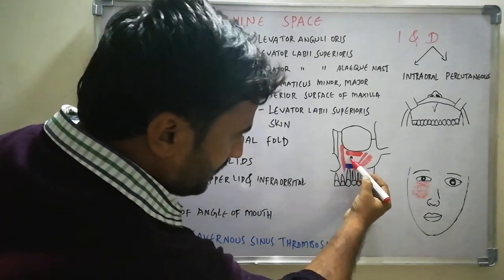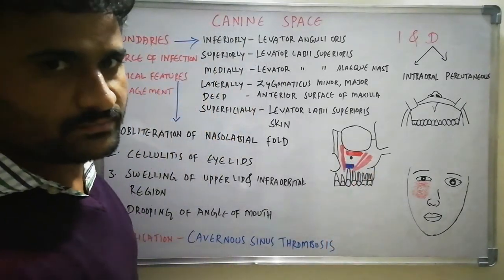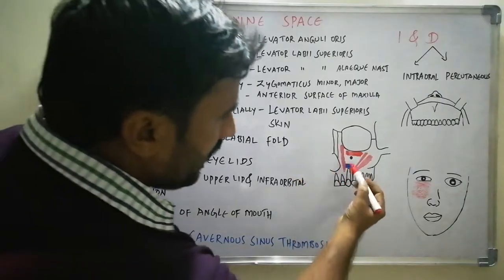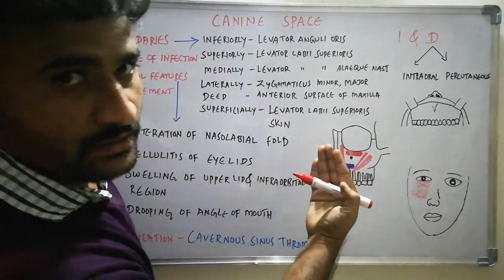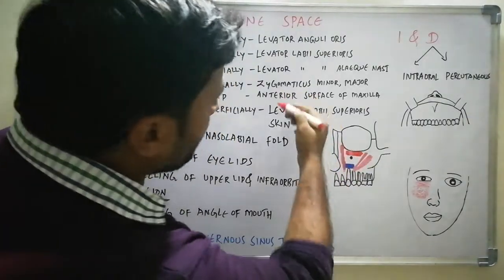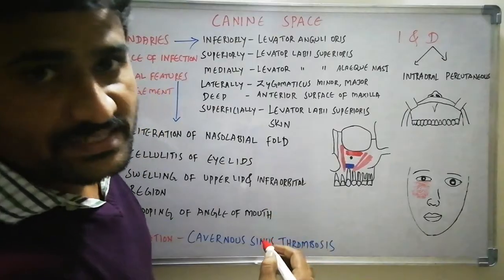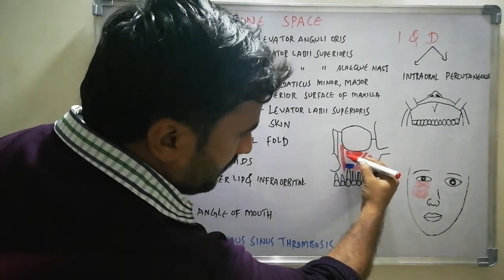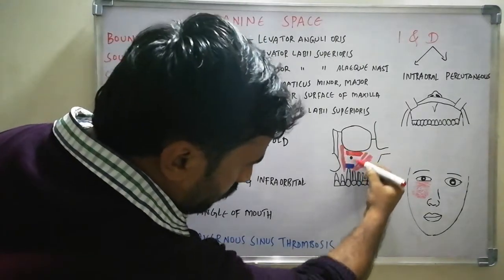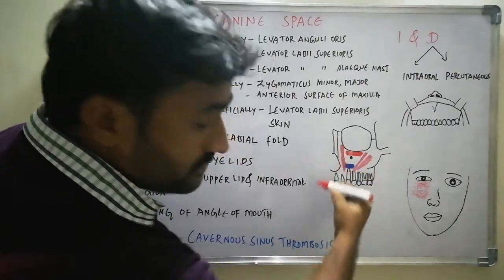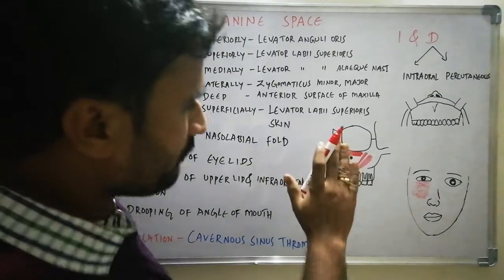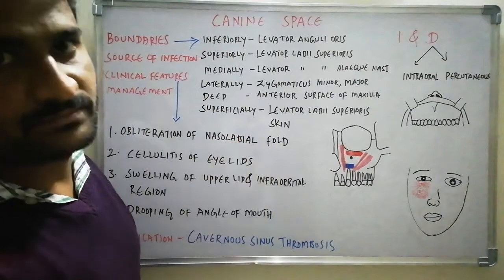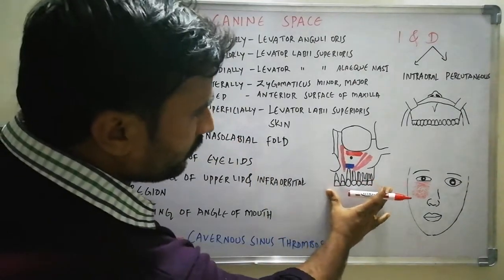The deep aspect is the anterior surface of the maxilla, facing towards us. Superficially, above these structures, we have levator labii superioris and the skin of the cheek. This levator labii superioris runs downwards and inserts on the upper lip, so superficially we have levator labii superioris and skin. These are the boundaries of the canine space.